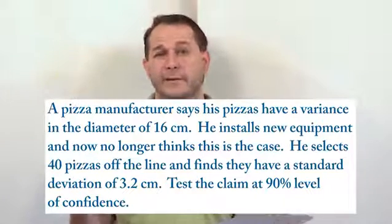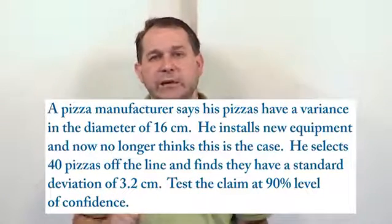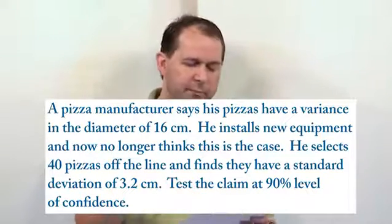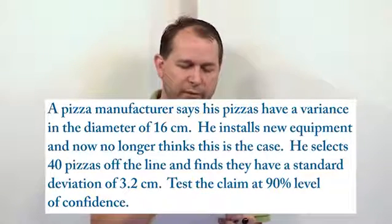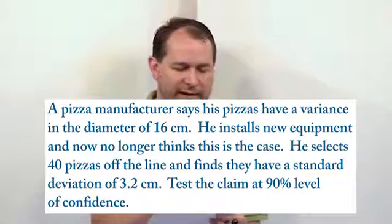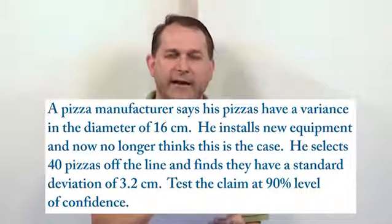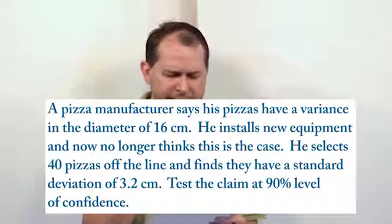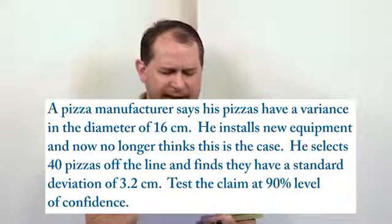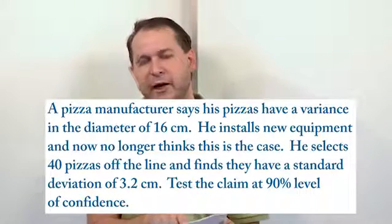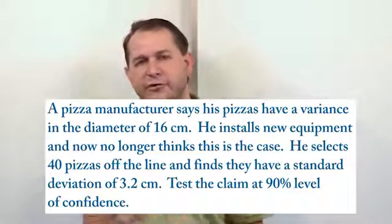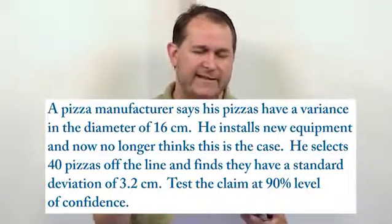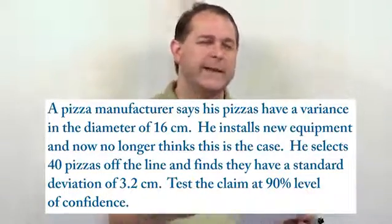So this is going to end up being a two-tail test. We're going to have a not-equal sign in there. Notice that when they do the data collection, they take 40 pizzas off the line and find that they have a standard deviation of 3.2 centimeters. This is a clever trick that can easily trip a student up.